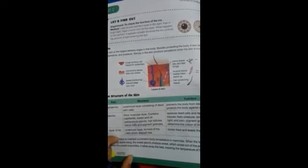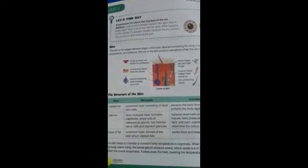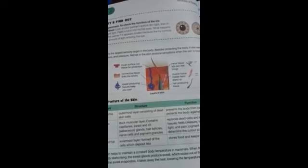Pigment granules give color to the skin. Nerve cells detect the sensation and pass impulses to the brain. The third layer is the layer of fats. It is the innermost layer formed of cells which deposit fats. This layer stores fat, warms the body in extreme temperature, and also stores food.